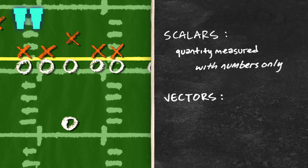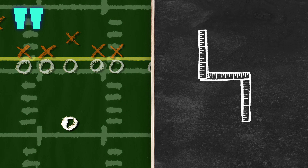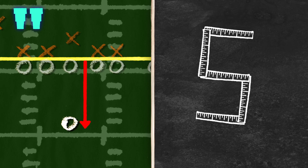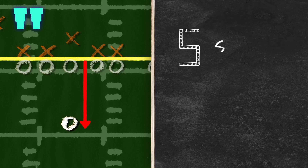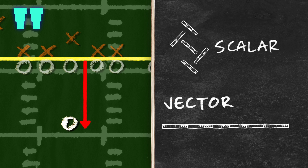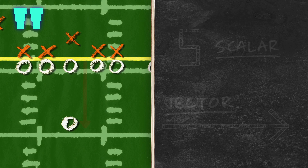Measurements are defined as two different quantities. Scalars are measurements with only numbers, and vectors are measurements with direction. For example, when that quarterback takes the snap he's five yards away — but from where? Back from the line of scrimmage. So the five yards by itself is a scalar quantity. When you add a direction, like 'five yards deep,' it becomes a vector quantity. Five yards: scalar. Five yards deep: vector.